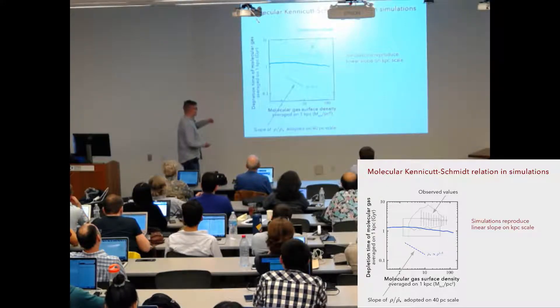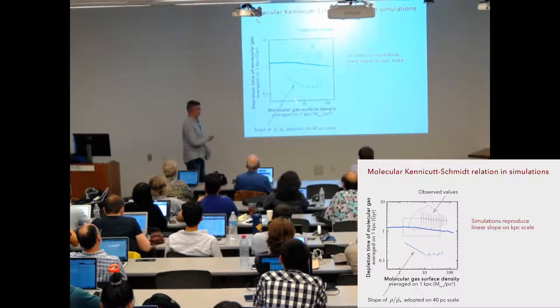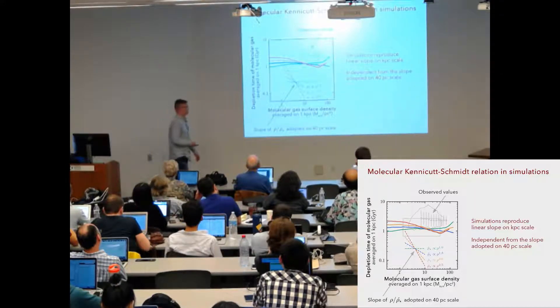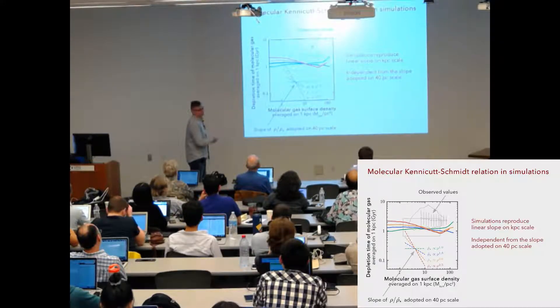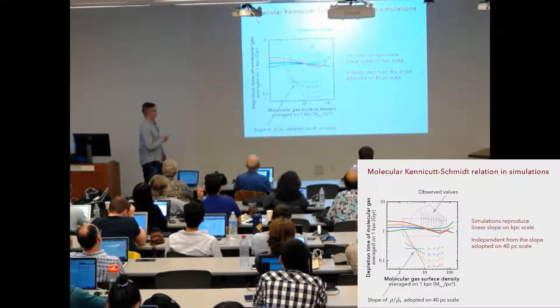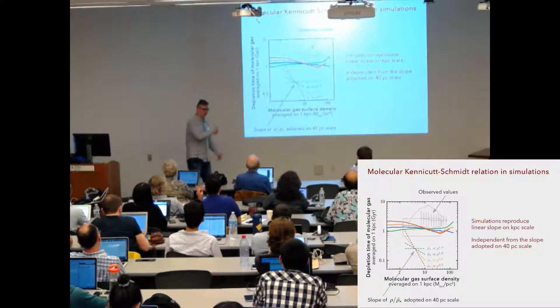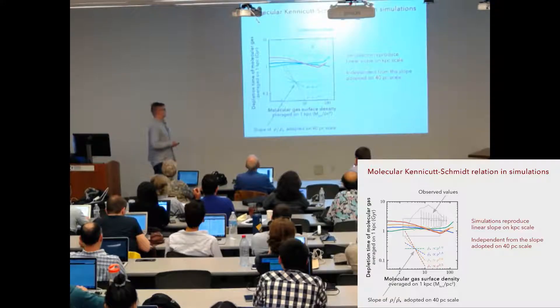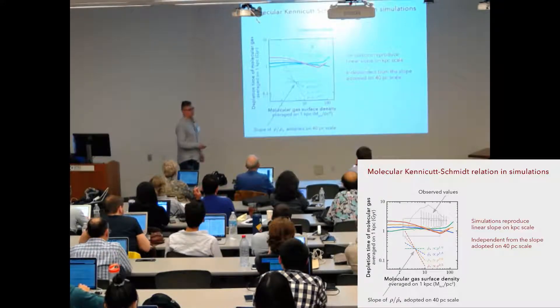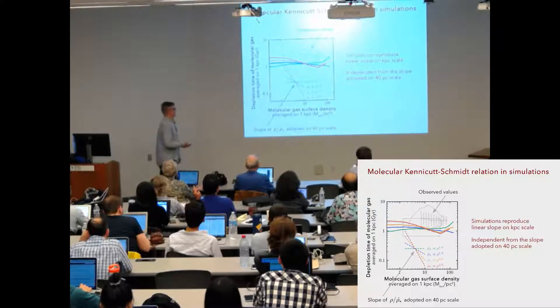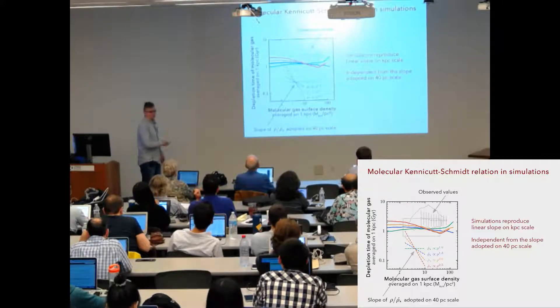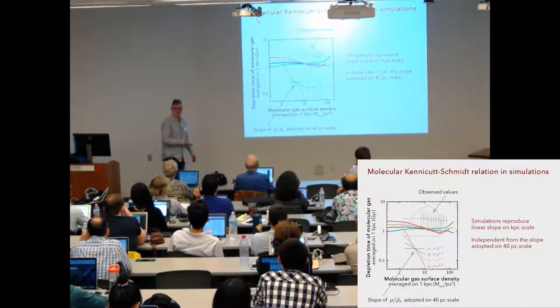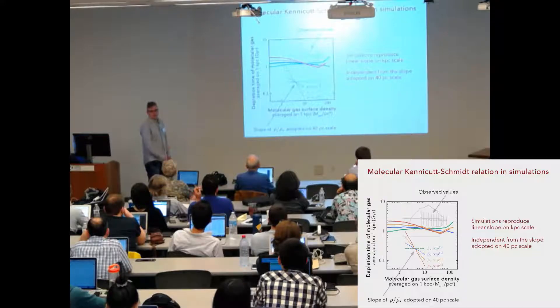Then, as I said, we can repeat the same simulation but change this local slope. And even if we set much stronger dependence on density, the slope which we then measure on kiloparsec scales is still close to linear. This is quite peculiar and this is actually another example when simulations do not just reproduce whatever you put in, but instead the result becomes independent of your assumptions on small scales. And moreover, the result is close to what observations tell us. This means that we can go into the simulations and try to understand what defines this linear slope on kiloparsec scales.